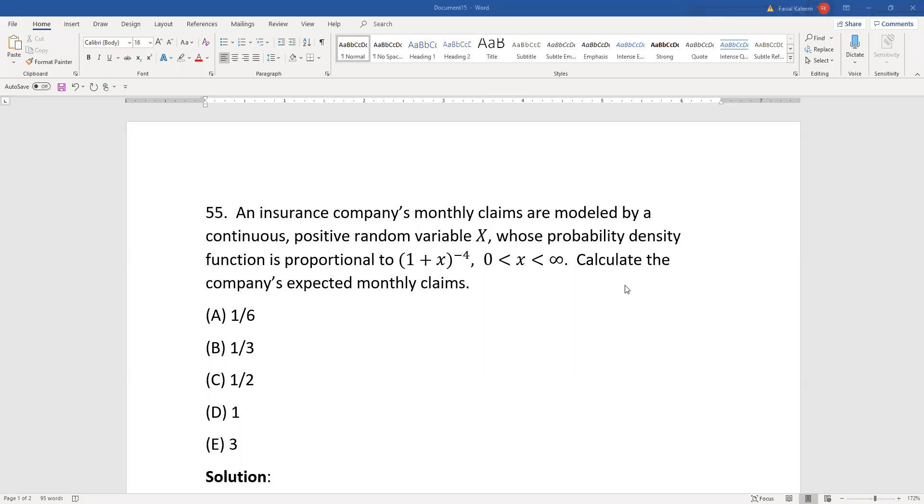An insurance company's monthly claims are modeled by a continuous positive random variable X whose probability density function is proportional to (1 + x)^(-4). Calculate the company's expected monthly claims.